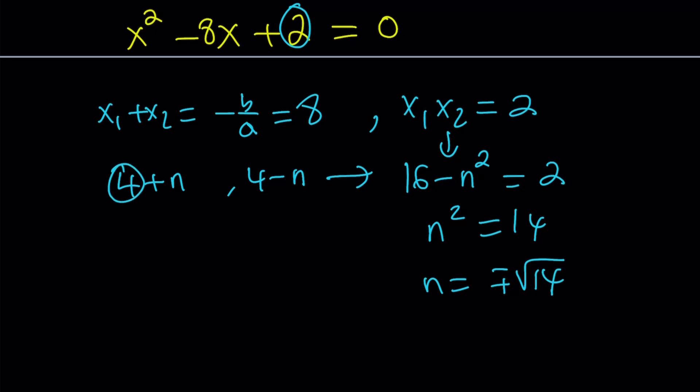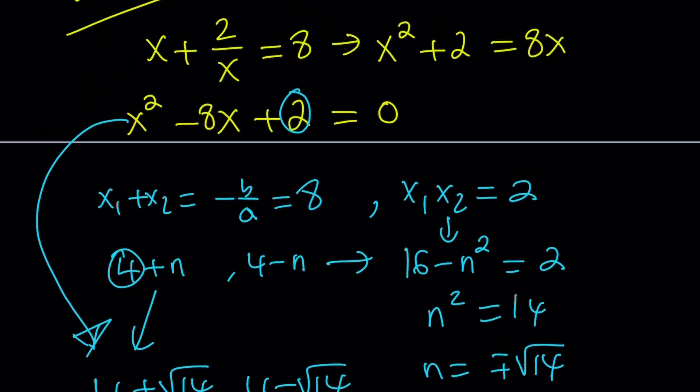And along with the 4, here's what we're going to get for the roots: 4 plus root 14 and 4 minus root 14. Obviously, you could find the same results with the quadratic formula. But this is much more fun. Okay. So these are the roots of our quadratic.